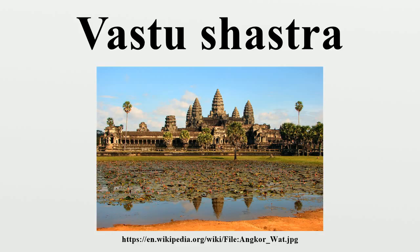Jaipur, the capital of the Indian state of Rajasthan and called the Pink City, was founded and built in the early 1700s incorporating many of the layout principles for a city found in Vastushastras. Similarly, modern era projects such as architect Charles Correa's designed Gandhi Smarik Sangrahalaya in Ahmedabad, Vidhan Bhavan in Bhopal, and Jawahar Kala Kendra in Jaipur adapt and apply concepts from the Vastushastra Vidya.